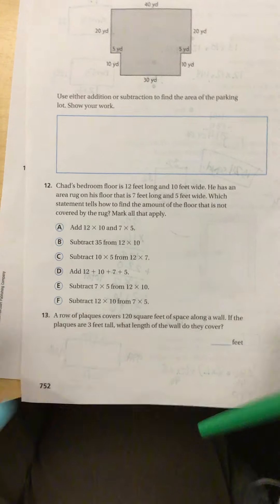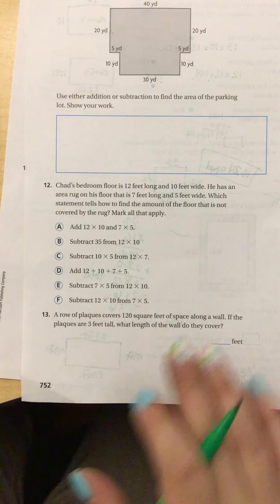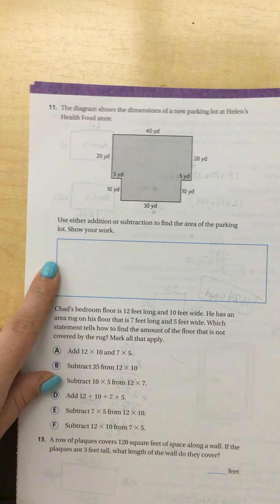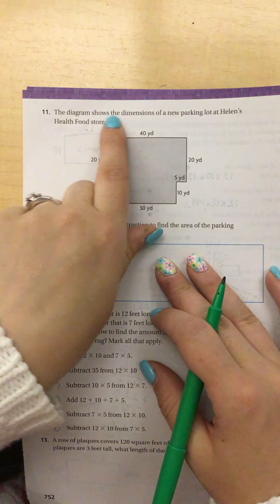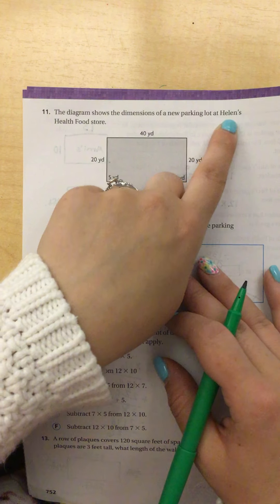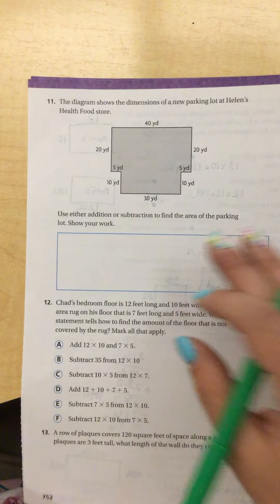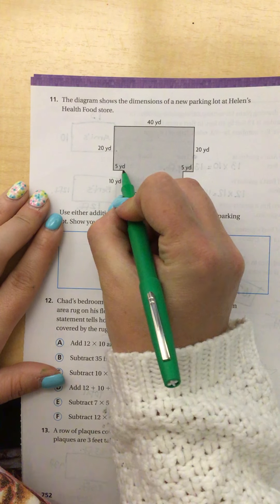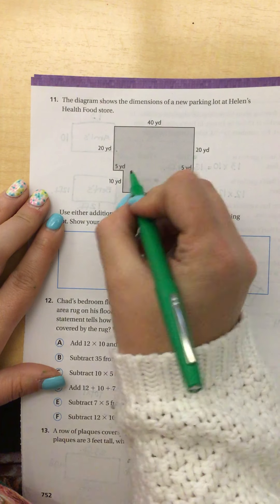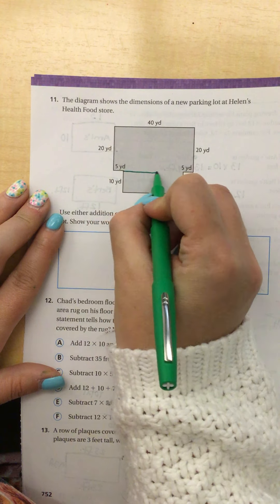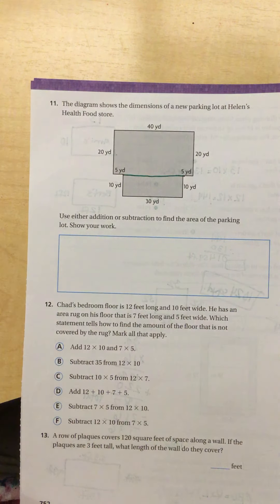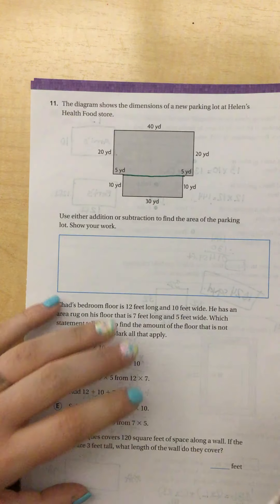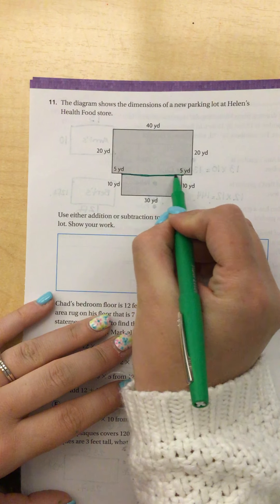All right, next question. The diagram, sorry, we just had a power outage, so I've got a little bit of static in the background. I apologize. The diagram shows the dimensions of a new parking lot at Helen's Health Food Store. So this is my diagram. Now, when I have a combined figure like this, I either need to cut the rectangle into more than one rectangle, or make the big rectangle and take out the little pieces. So I find it easier just to cut this. And now I'm going to figure out if I know enough information to be able to solve this.